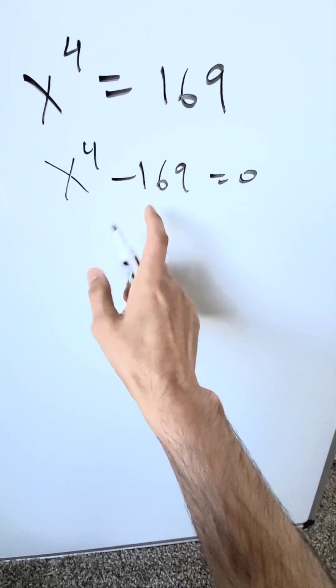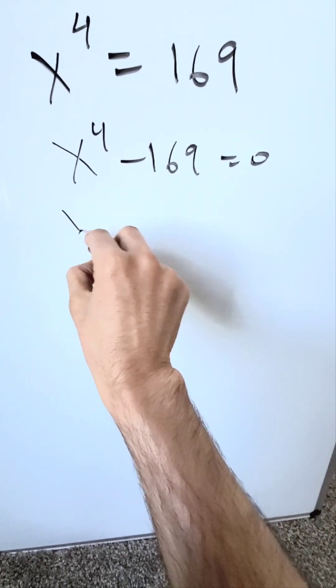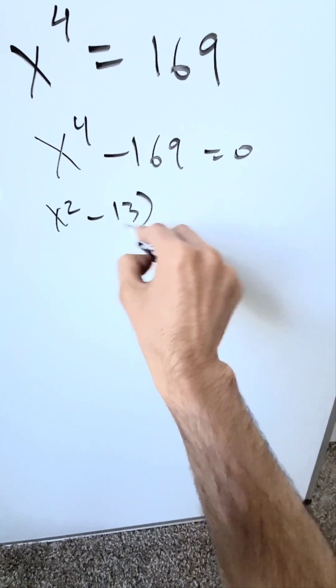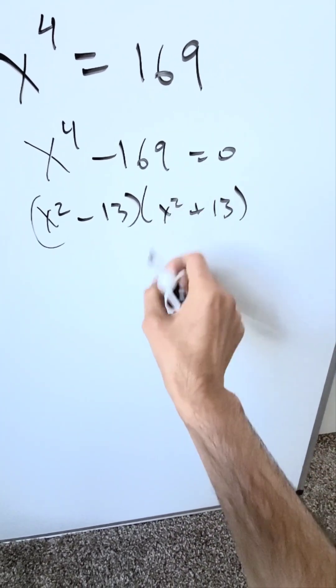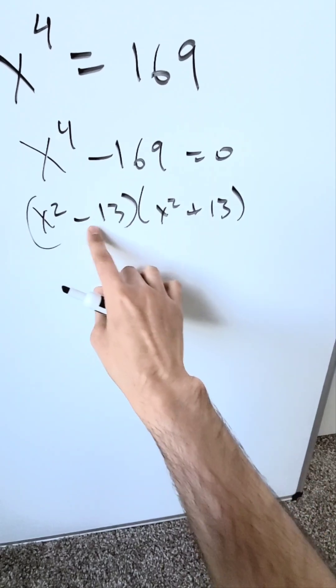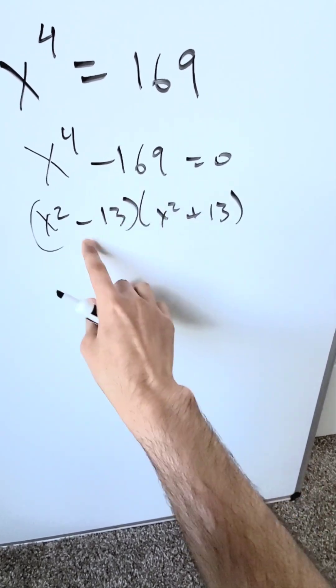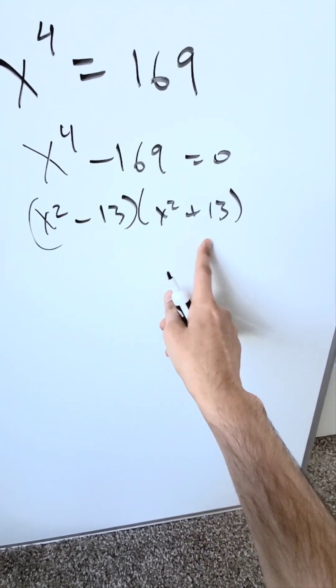You're looking at something which could be, in terms of a factor, you have something x squared minus 13 and x squared plus 13. Because 13 squared is equal to 169, 13 times 13, 1 positive, 1 negative will be that. Everything looks good. It's correct. This is where we are.